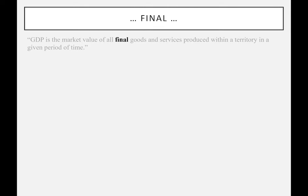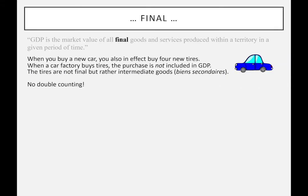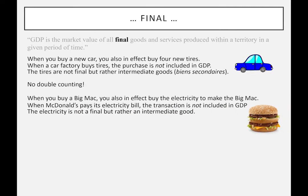The word 'final' is a major point. When they first started calculating GDP, they understood that some transactions include something that's been purchased before. For example, when you buy a new car you also implicitly buy four new tires, but the car company already bought those tires — you can't count them twice, as that would give a false idea of economic activity. Similarly, when you buy a Big Mac, implicitly you're also buying the electricity used to make it — but McDonald's paying its electricity bill is treated as an intermediate good. The basic principle is no double counting; only final goods are counted.